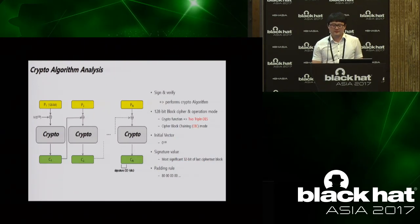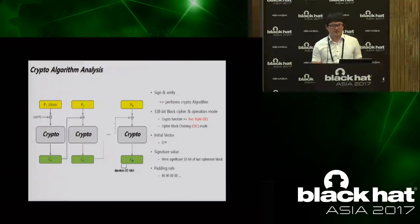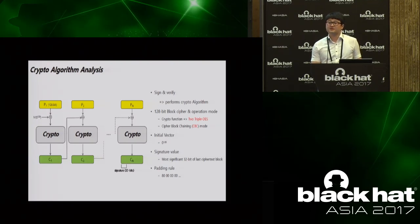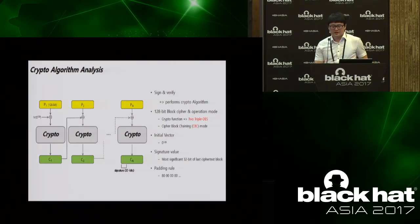The crypto algorithm used in the authentication process is a 128-bit block cipher with CBC operation mode. For 128-bit encryption, two-key triple-DES is performed twice. Recovering the card key means recovering the 128-bit triple-DES key. Thus, we focus on recovering the triple-DES key.